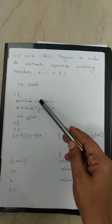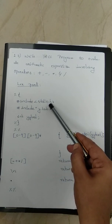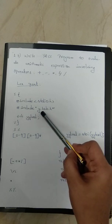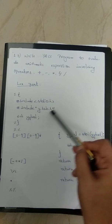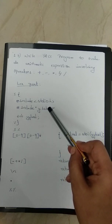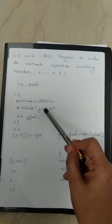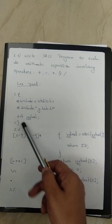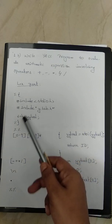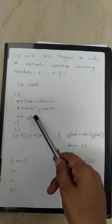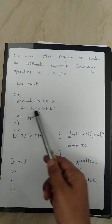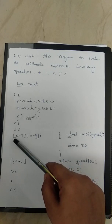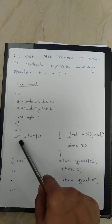The LEX program starts with the declaration section where we can include header files and variables. Along with stdio.h, we include y.tab.h, which contains the definition of tokens. With this header file we can pass tokens with values to the YACC program. We have also declared the variable yylval, a global variable used in both LEX and YACC programming that holds the integer value of the matched string.